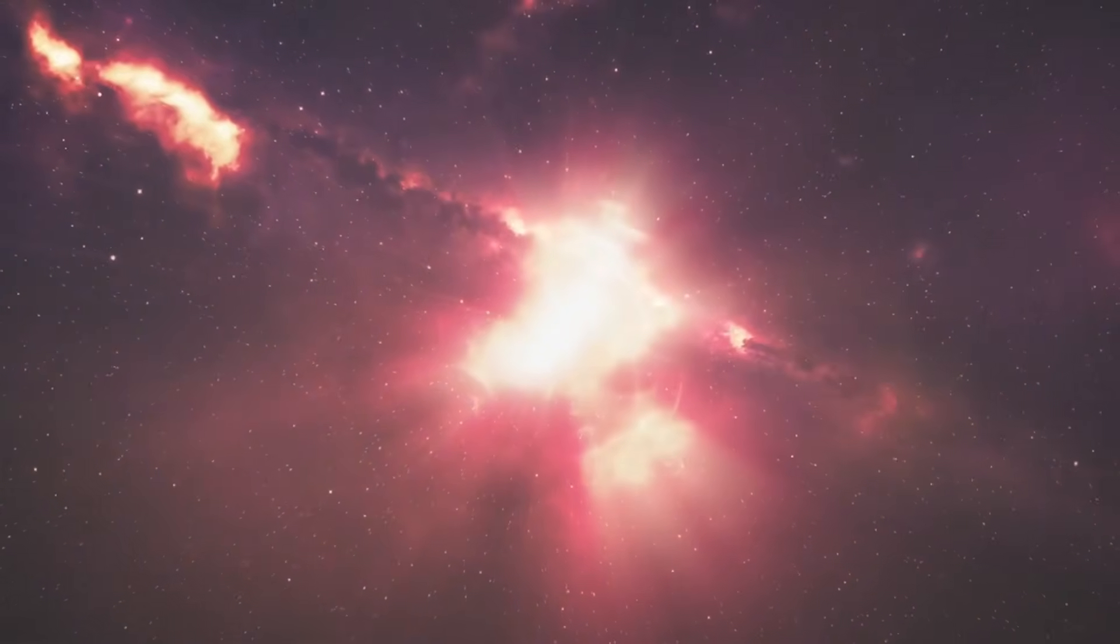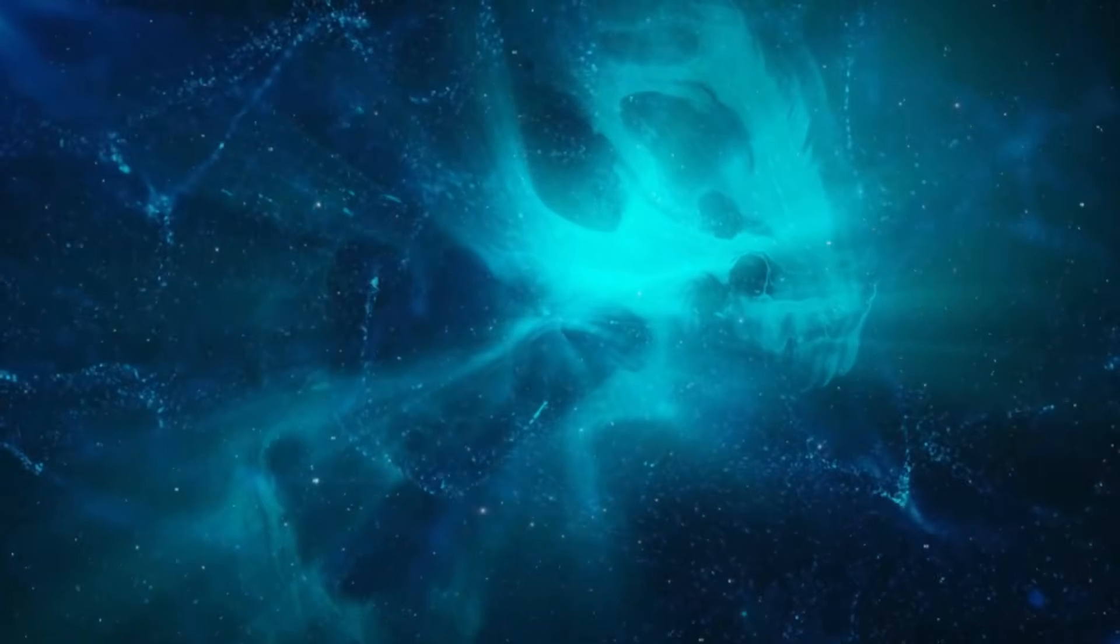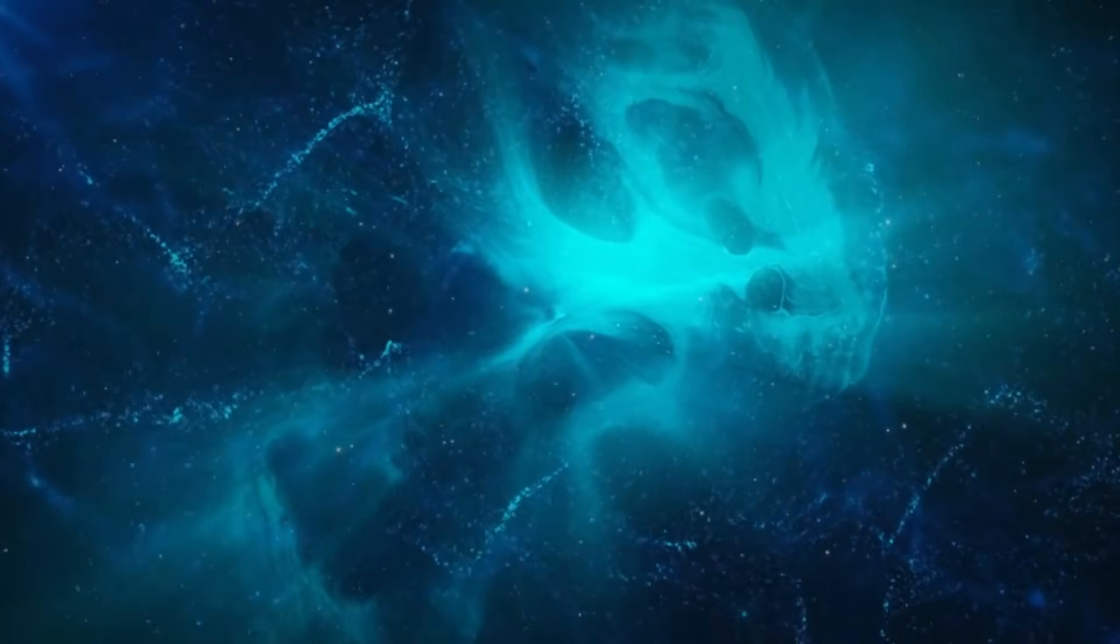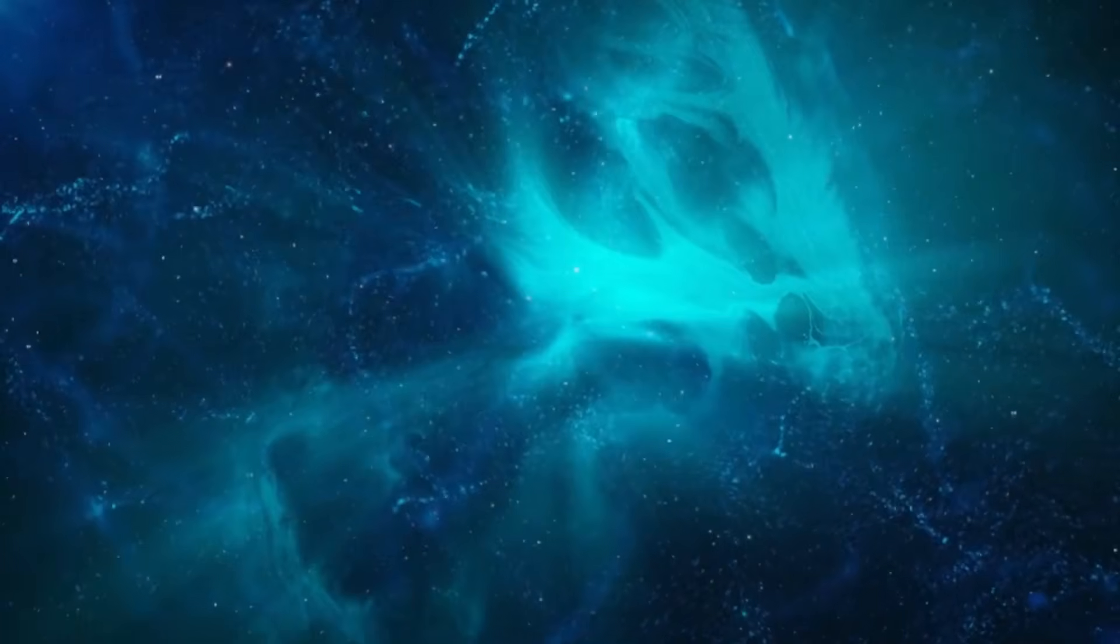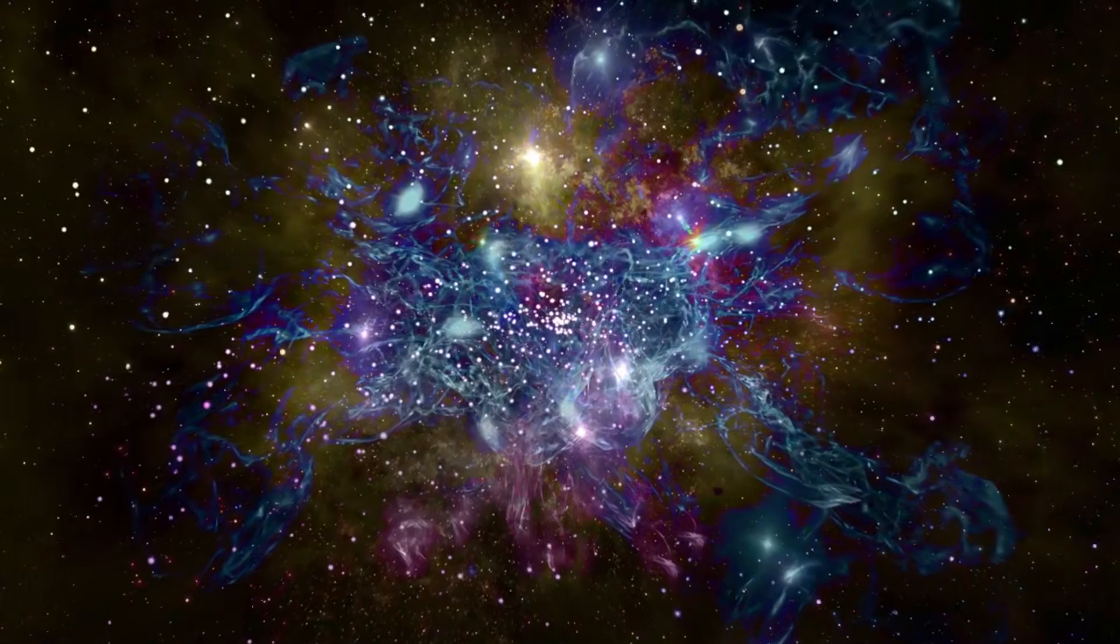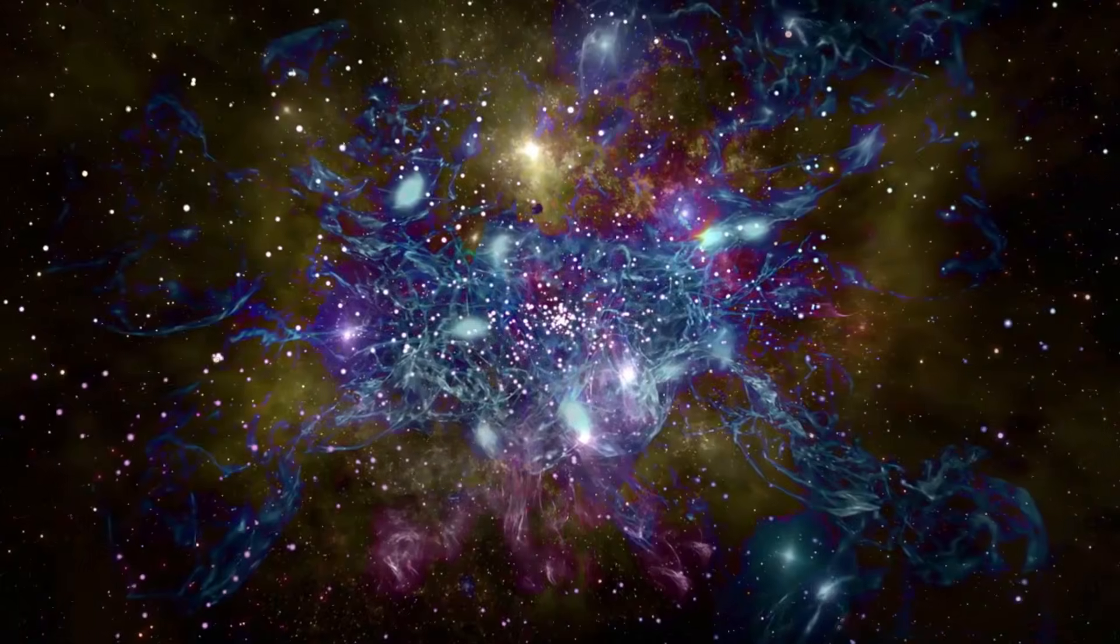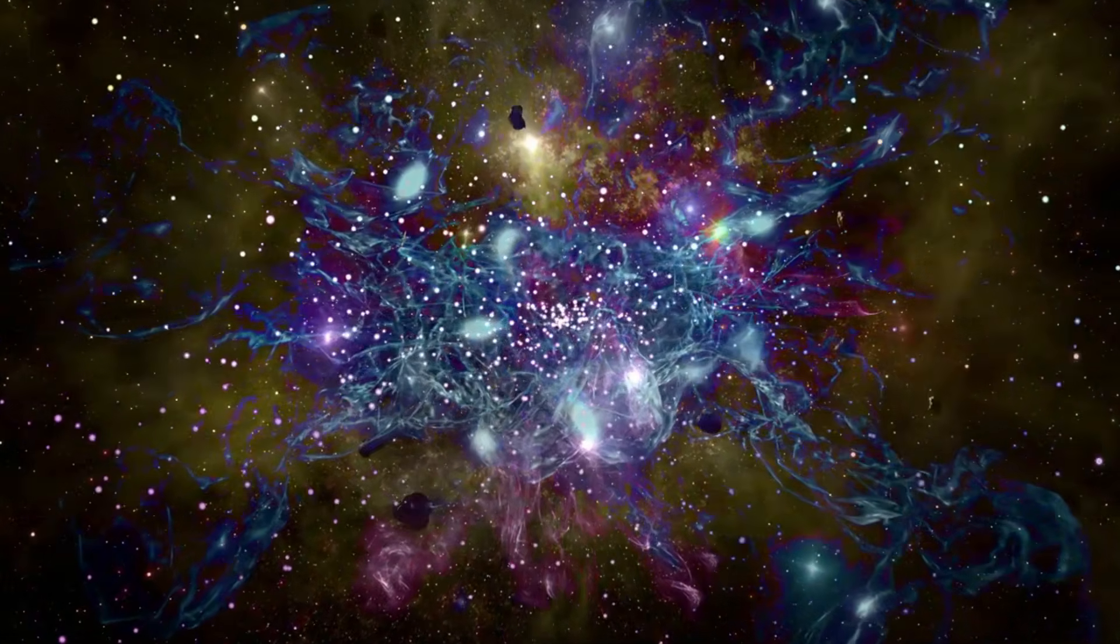While our Sun also has dark magnetic spots, Betelgeuse's spots are much larger and more numerous. To give you a sense of scale, some of these spots can be twice as large as Earth. Betelgeuse also has a magnetic field that's 1,000 times stronger than the Sun's.